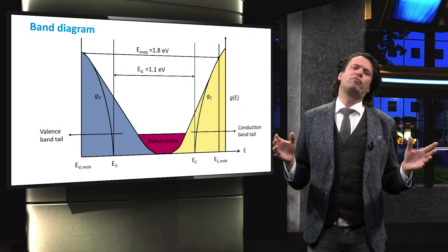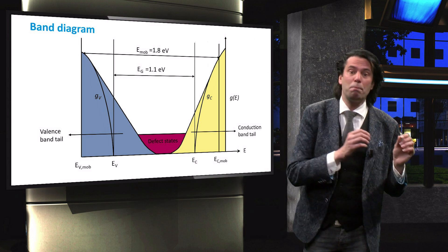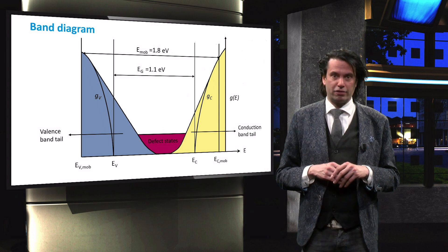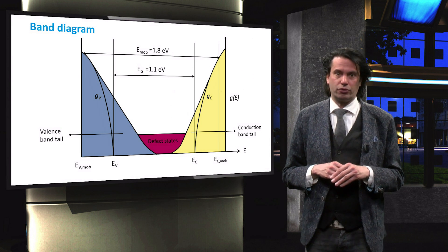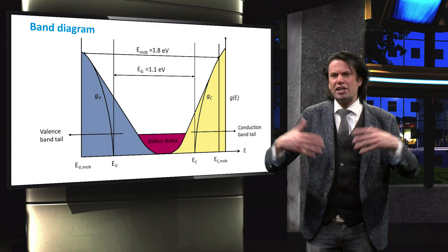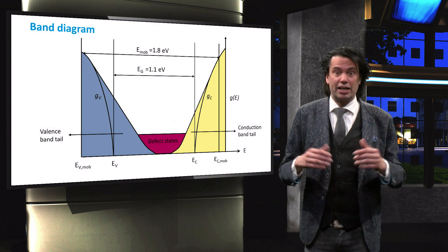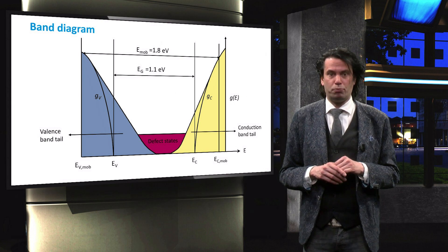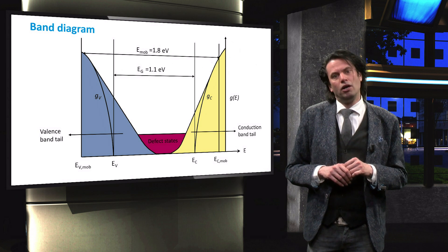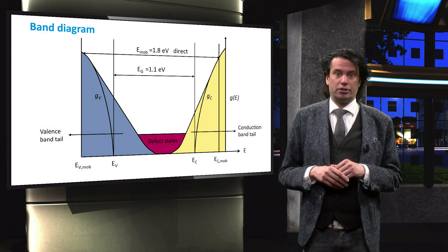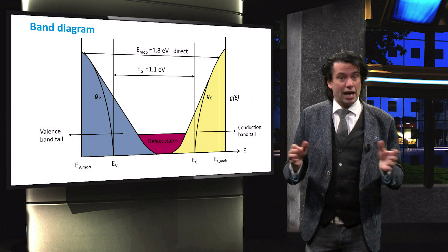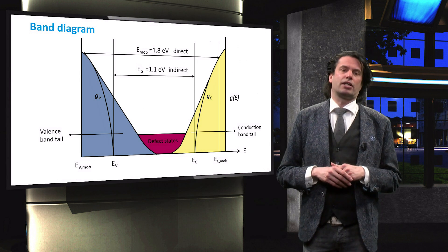The optical band gap of amorphous silicon ranges from 1.6 to about 1.8 eV depending on the hydrogen content. Due to the greater number of allowed energy states, the electron momentum of amorphous silicon is poorly defined. Amorphous silicon is therefore a direct band gap material, and amorphous silicon has a larger band gap than crystalline silicon.